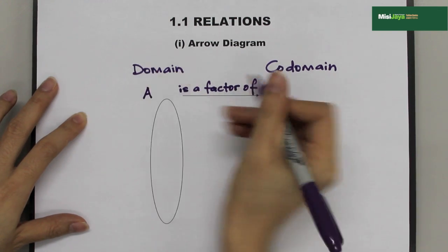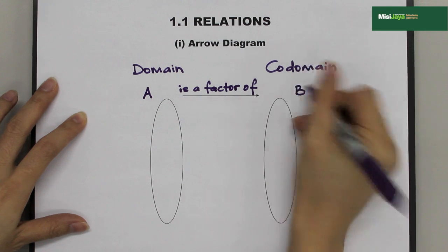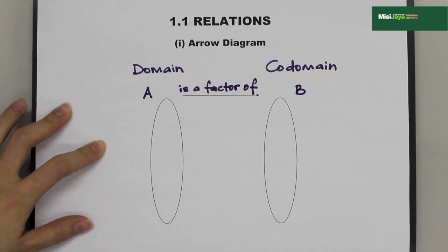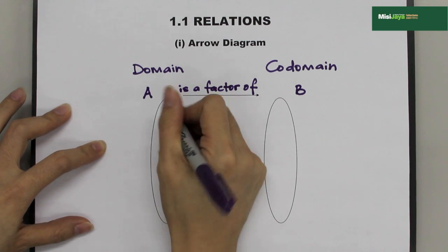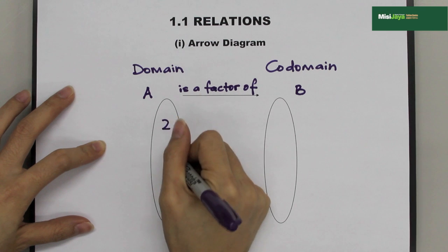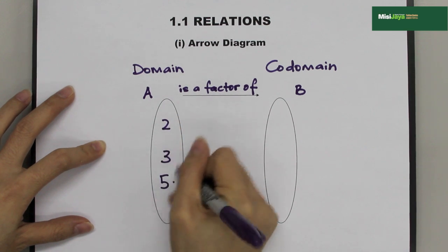These are labeled as A, and these are labeled as B. The objects in A, for example, 2, 3, and 5.